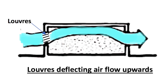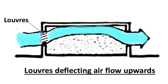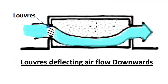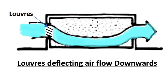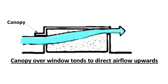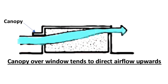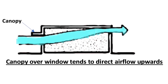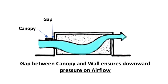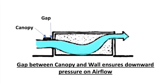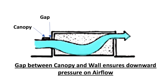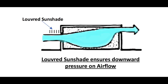Louvres deflecting airflow upwards; louvres deflecting airflow downwards. A canopy over a window tends to direct airflow upwards, while a gap between the canopy and wall ensures downward pressure on airflow. A lowered sun shade also ensures downward pressure on airflow.